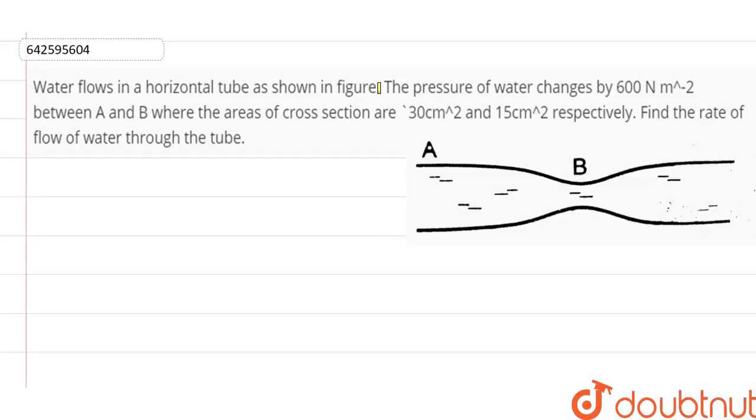Water flows in a horizontal tube as shown in figure. The pressure of water changes by 600 Newton per meter square between A and B, where the areas of cross-section are 30 centimeter square and 15 centimeter square respectively. Find the rate of flow of water through the tube.